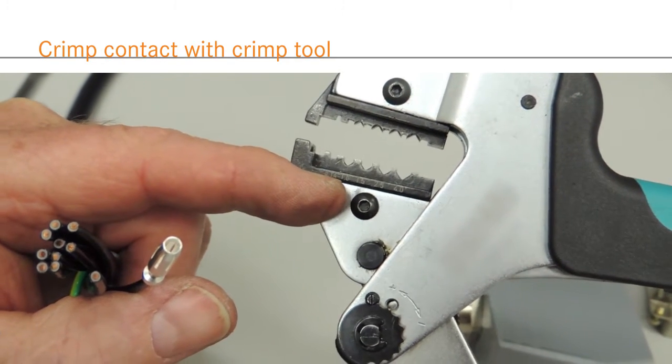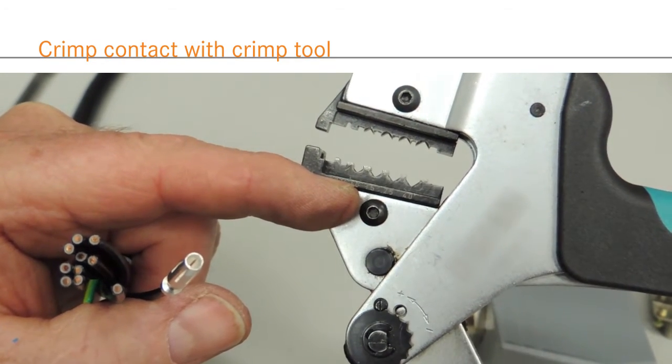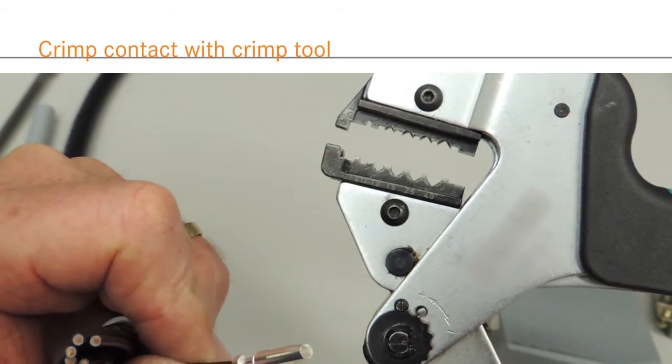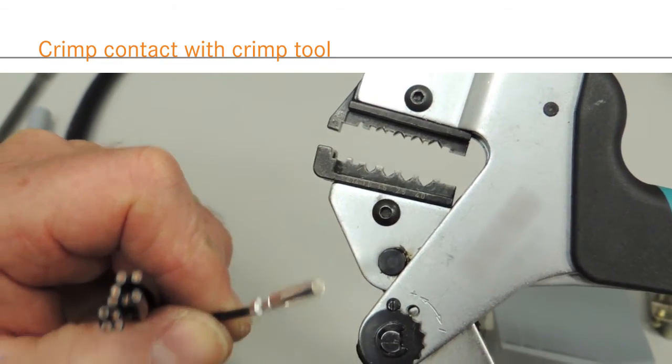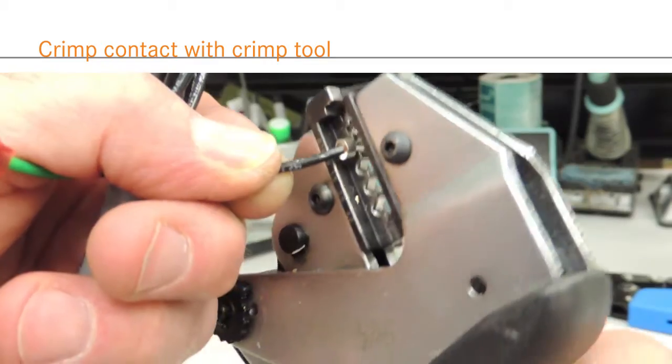Using the appropriate crimp die, in this example that's one millimeter, crimp the contact to the wire using a crimping tool.